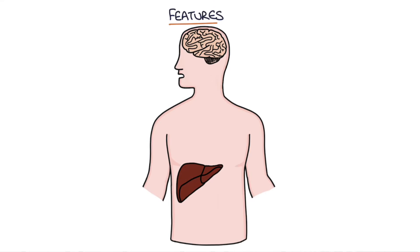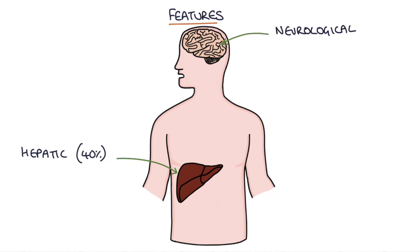Most people with Wilson's disease present with one or more of three different systems: hepatic problems or liver problems, which occur in 40% of people; neurological problems or problems with the brain, which occur in 50% of people; or psychiatric problems, which occur in 10% of people.